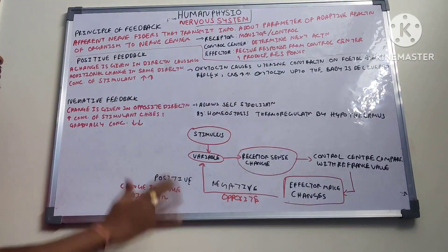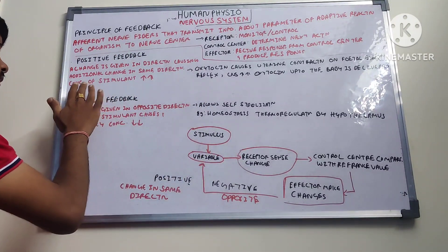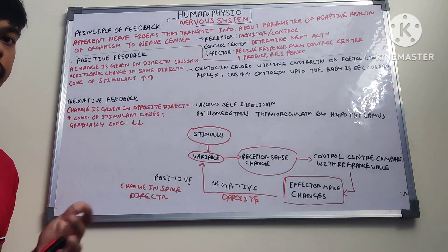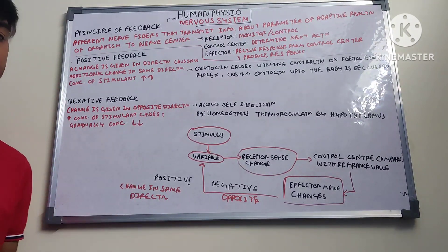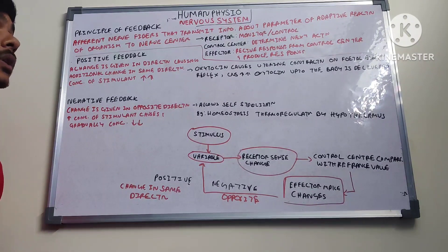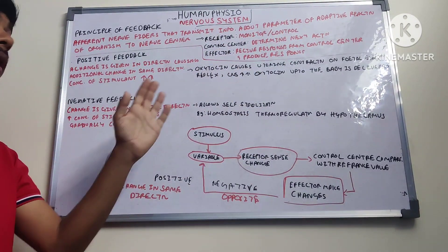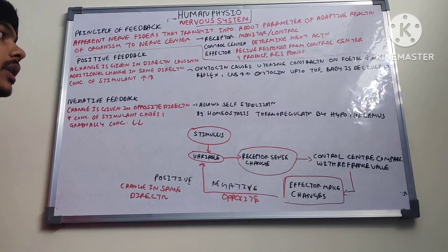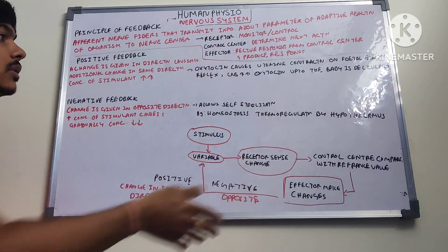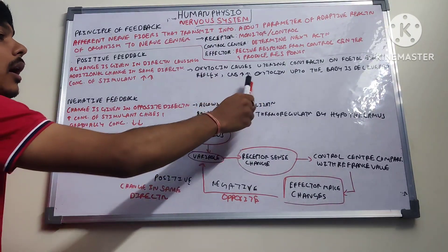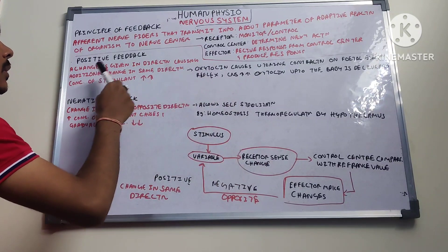In positive feedback, a change causes additional change in the same direction, and the concentration of the stimulant is increased. Example: childbirth — the fetal ejection reflex causes uterine myometrium and cervical contractions, which signal the CNS to release more and more oxytocin. More and more oxytocin is released until the baby is delivered, and then the positive feedback loop closes.